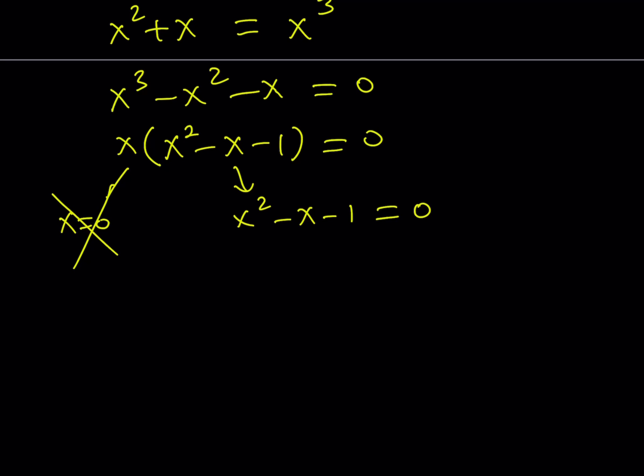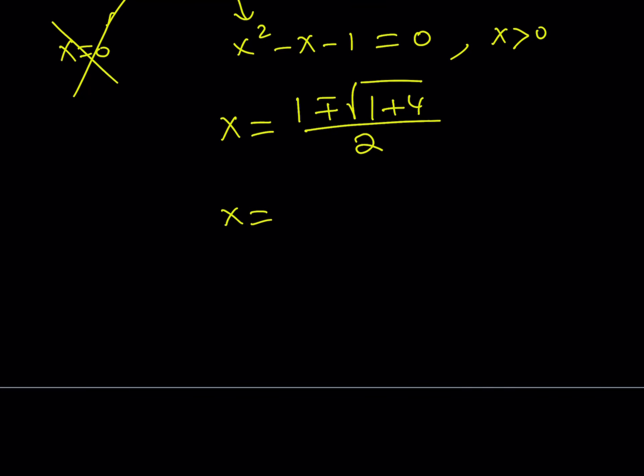The quadratic should give us solutions. But remember, x must be greater than 0. So we're going to solve this quadratic equation using the quadratic formula, negative b, plus minus the square root of b squared, which is 1, minus 4ac, which is plus 4. And this is where the golden flavor comes in. Hopefully that makes sense.